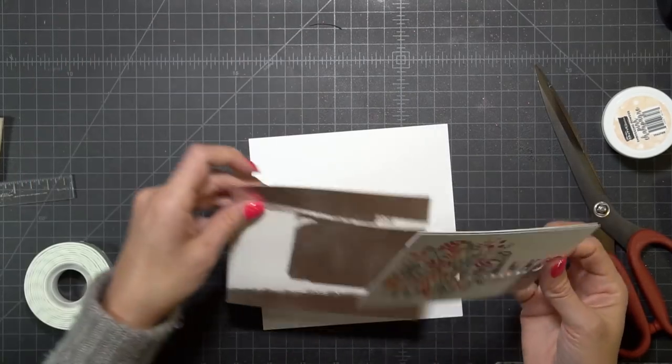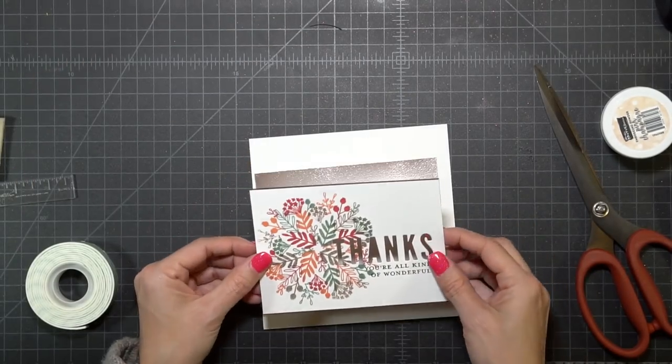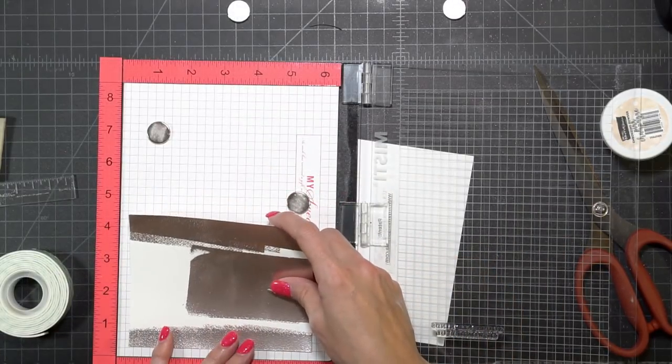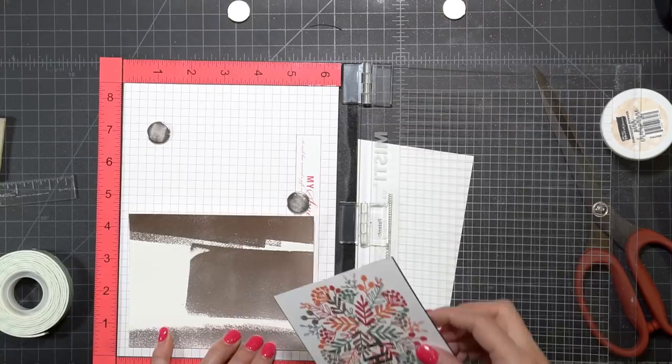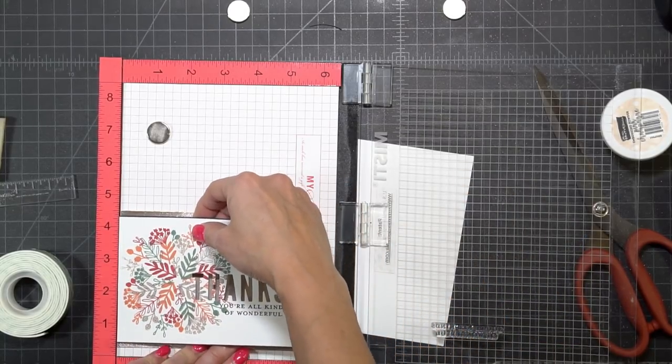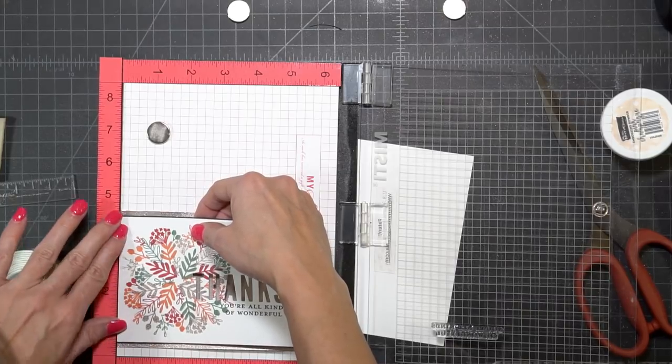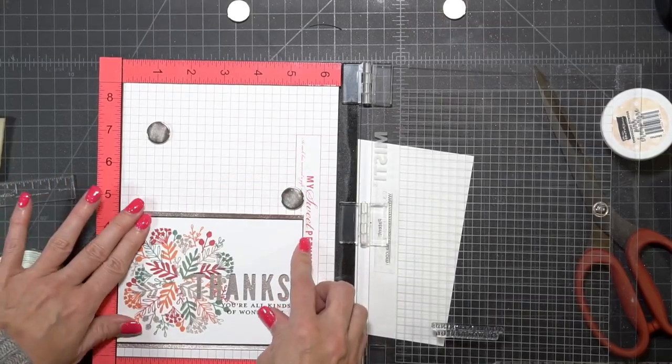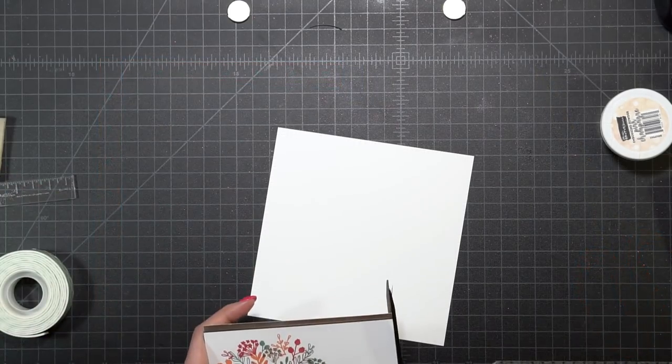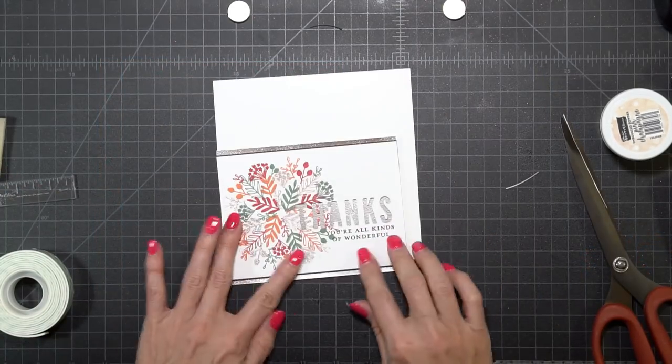Once I've peeled off all the tape, I'm going to adhere it to my card panel. It was a little warped, so I put it inside my MISTI so that I could line it up against the edge. It was a lot easier to do it this way, and then I could tell if it was even from top and bottom. Once I have that done, I'm going to trim off any overhang with my scissors.